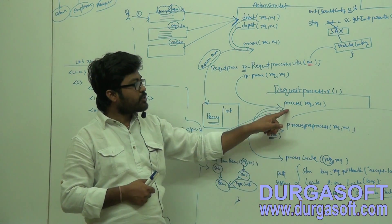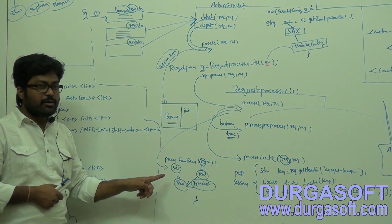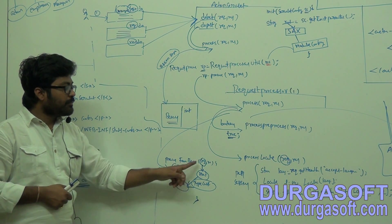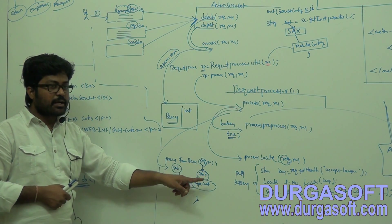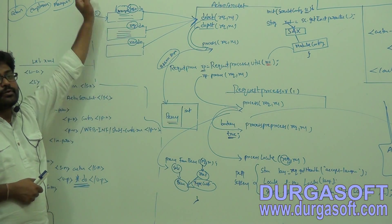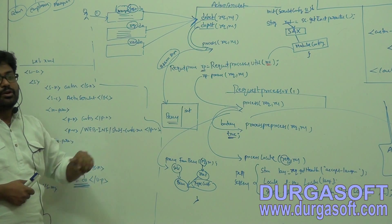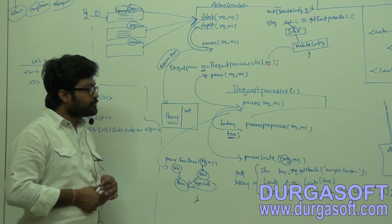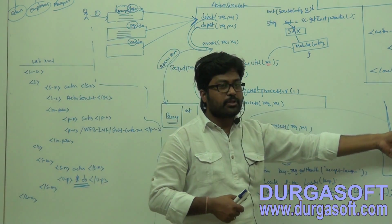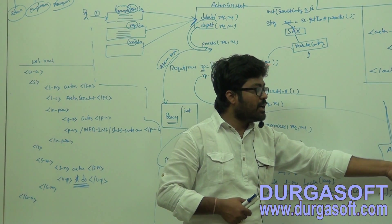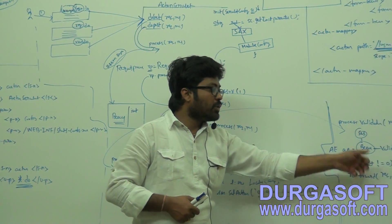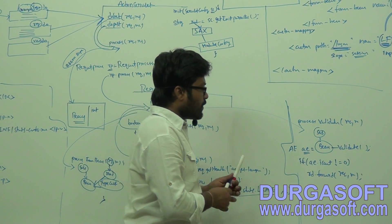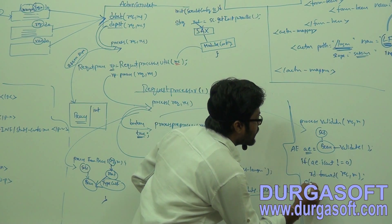Then the process method calls processFormBean. It will read data again and try to store it into your bean object. If you send valid data, it will call the validate method. In this validate method, if it does not find any error messages, we go to the else case.